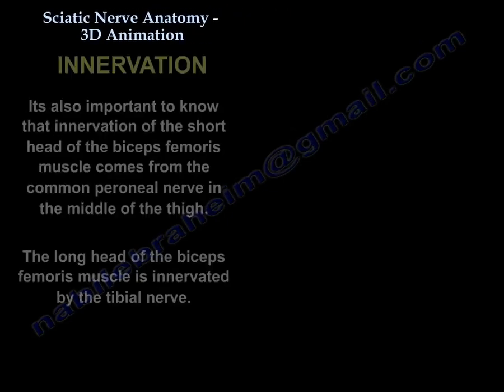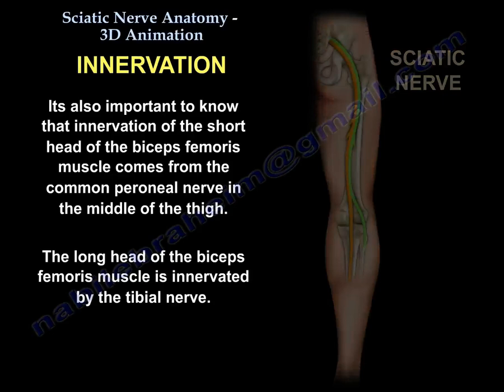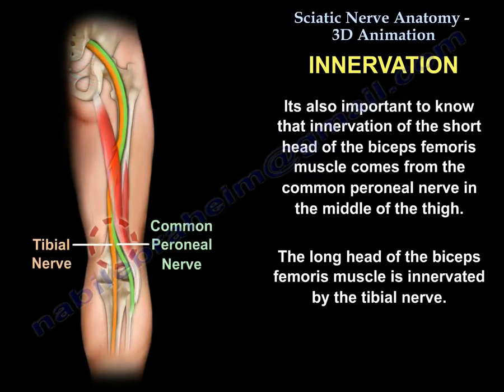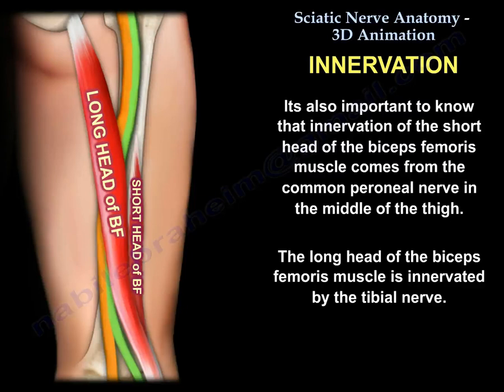It's also important to know that innervation of the short head of the biceps femoris is the common peroneal nerve, in the middle of the thigh. This is different from the long head of the biceps femoris, whose innervation is the tibial nerve.